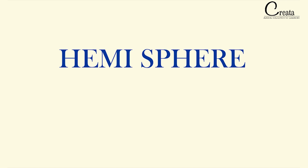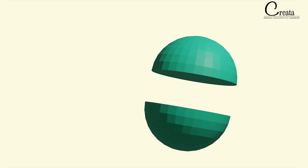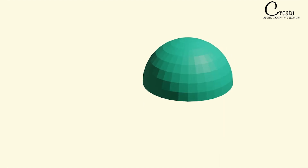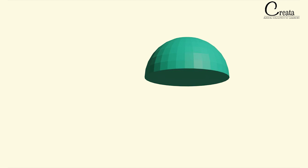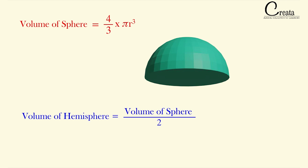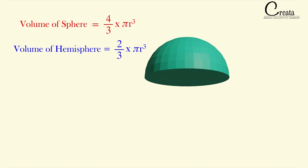Moving further, let's take the hemisphere. A hemisphere is basically the half portion of the sphere. If we divide the sphere into two equal portions, we get two hemispheres. The volume of the hemisphere will be half the volume of the sphere, which equals (2/3)πr³.